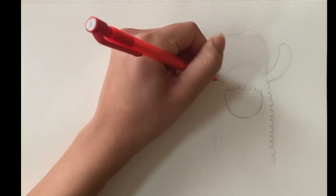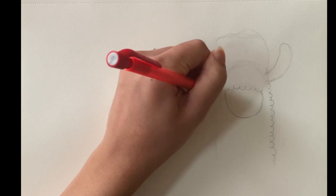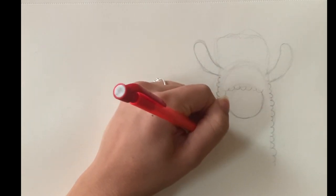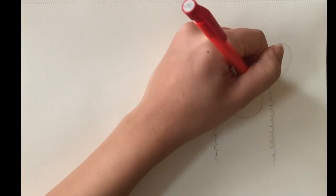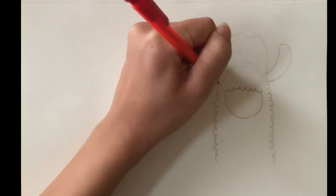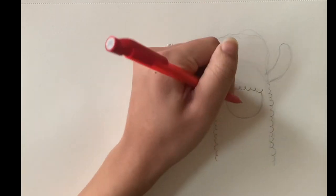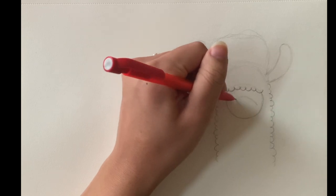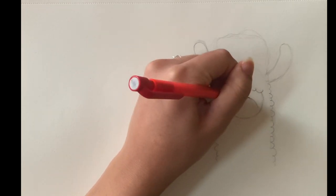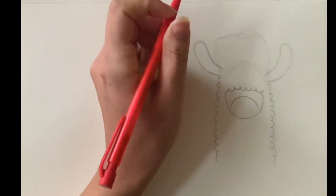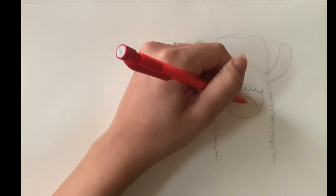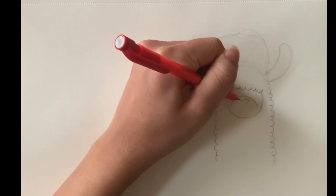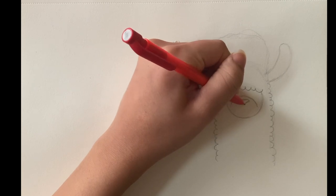I'm just going along that ghost outline, that guide shape that I made, and giving our llama his fur. Now I'm going in and starting to draw out his face. We've got his little muzzle or nose right there, and I'm going to draw that as a little triangle heart shape.